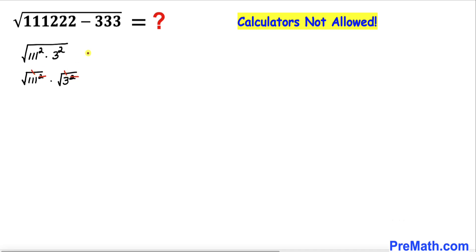Therefore we end up with 111 times 3, which equals 333. Thus our simplified answer turns out to be 333.